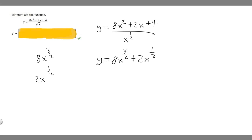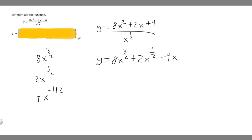Then we have the constant 4. You might notice there's no x in front of the 4, but you have to recognize that 4 is the same thing as 4 times x to the 0, because x to the 0 is 1, and 1 times 4 is 4. So just imagine it's 4x to the 0, and then we subtract 1 half from this exponent, giving us 4x to the minus 1 half. Now all we have to do is differentiate it.